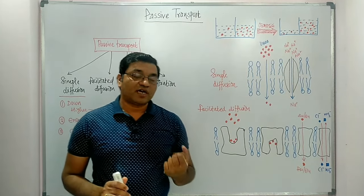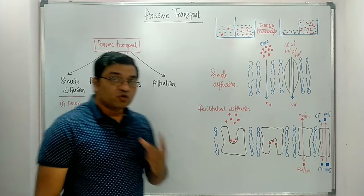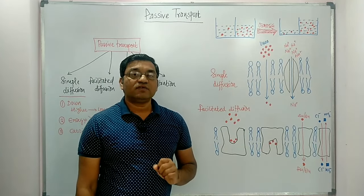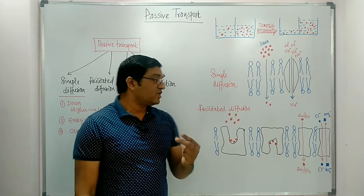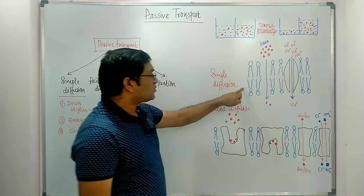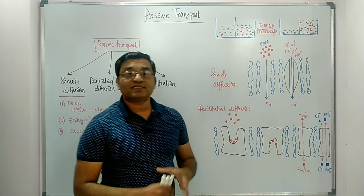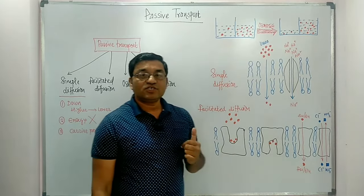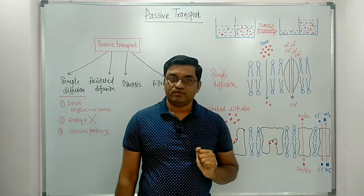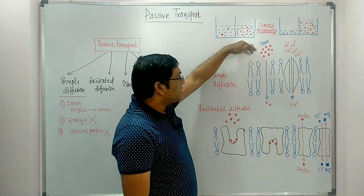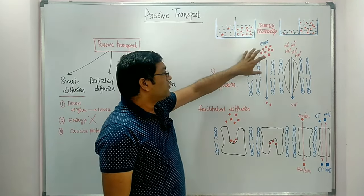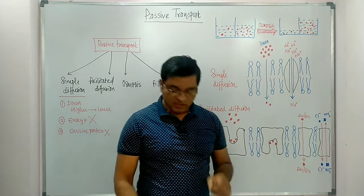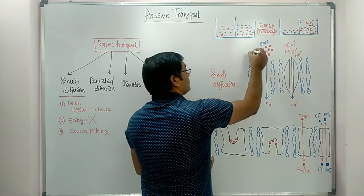There are two mechanisms of transport in Simple Diffusion. The first mechanism is the transport of Lipid Soluble Compounds, mainly gases and urea. These are transported directly through the Lipid Bilayer because they are soluble in lipid, allowing them to travel through the membrane from higher concentration to lower concentration.